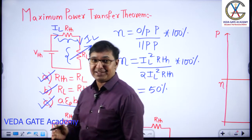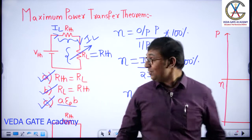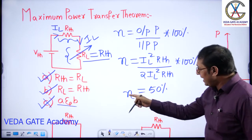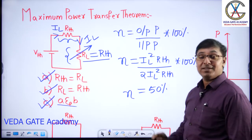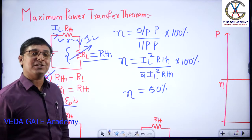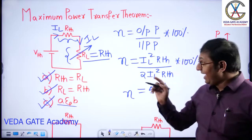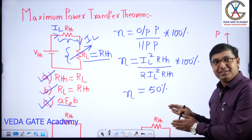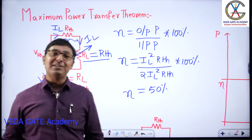From here, the real discussion starts. The interviewer asked: when RL equals RTH, efficiency is 50 percent — agreed. When RL equals dash, efficiency is 100 percent. This is the question posed by the interviewer.